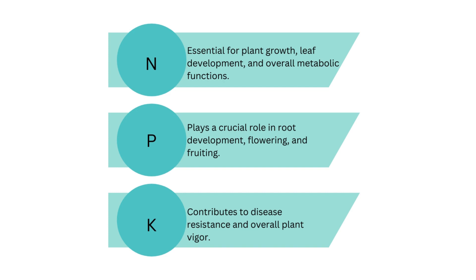The symbol P stands for phosphorus. Phosphorus is involved in energy transfer and storage as ATP, cell division, and the formation of nucleic acids. Therefore, phosphorus plays a crucial role in root development, flowering, and fruiting.